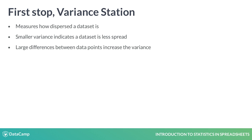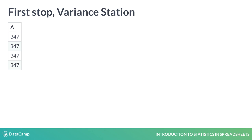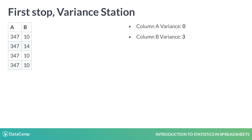Column A repeats with no variation — its variance is 0. In column B, one value, 14, is different yet close to the others, so its variance is 3. Column C has an outlier, 100, and as a result its variance is the highest among the three.